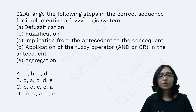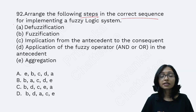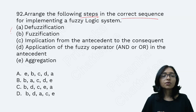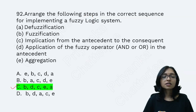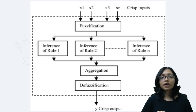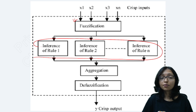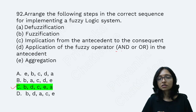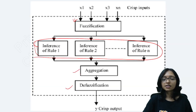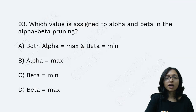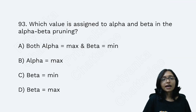The next question asks for the correct sequence in fuzzy logic. Sequence-type questions are very popular nowadays. The answer follows this order: first fuzzification, then rules are applied (AND, NOT, OR gates), then aggregation, then defuzzification. That is why this is your answer.